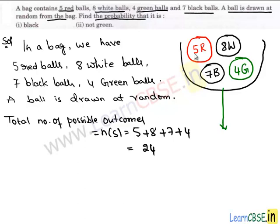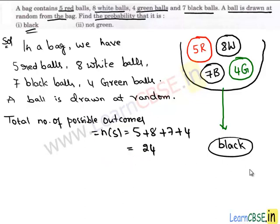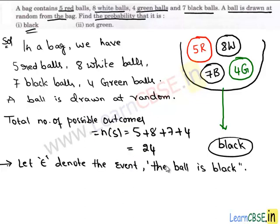We are supposed to find the probability that the drawn ball is black. So, if we take E as the event that the ball is black, then we can find the probability. The total number of favorable cases to event E is seven, since we have seven black balls in the bag. So the number of favorable outcomes to event E, n(E), is seven.